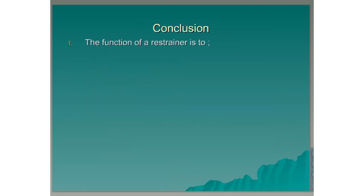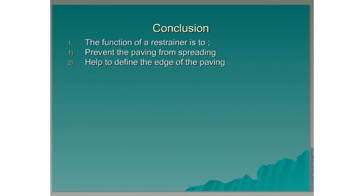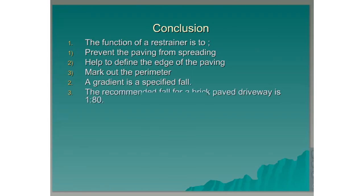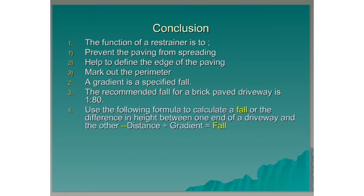Conclusion. The function of a restrainer is to prevent the paving from spreading, help to define the edge of the paving, and to mark out the perimeter. A gradient is a specified fall. The recommended fall for a brick paved driveway is 1 in 80. Use the following formula to calculate the fall, or the difference in height between one end of a driveway and the other: distance divided by the gradient is equal to the fall.